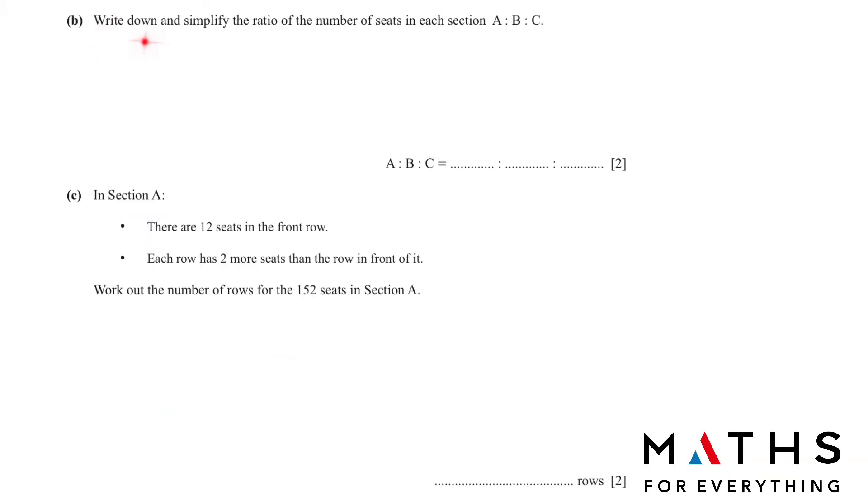Part B. Write down and simplify the ratio of the number of seats in each section A, B, C. We have A, B and C. A is 152, B is 171, C is 57. Now we have to simplify it.